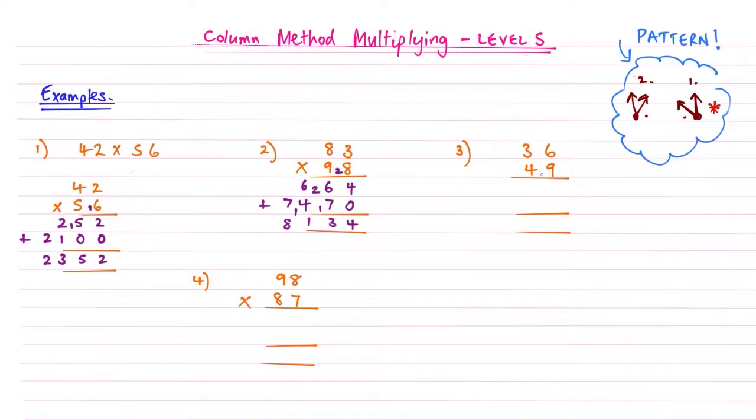Question 3: 9 times 6 becomes 54, writing the 5 small. Then 9 times 3 is 27, add that 5, and it becomes 32. Moving to the 4, following pattern 2 and adding the 0. 4 times 6 is 24, writing the little 2. Then 4 times 3 is 12, add that 2, becomes 14.